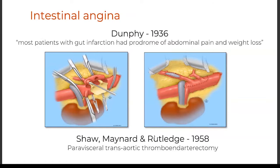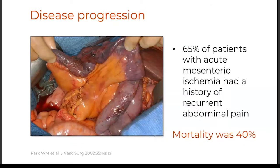Intestinal angina is really the primary symptom of chronic mesenteric ischemia. This term was coined in a landmark publication by Dunphy in 1936, where he described that most patients with gut infarction had a prodrome of abdominal pain and weight loss. The first pair of useful transaortic thromboendarterectomy was reported in 1958 by Shaw, Annard, and Rutledge.